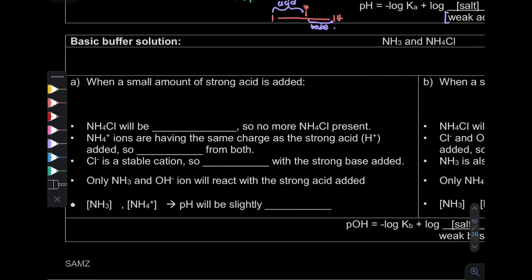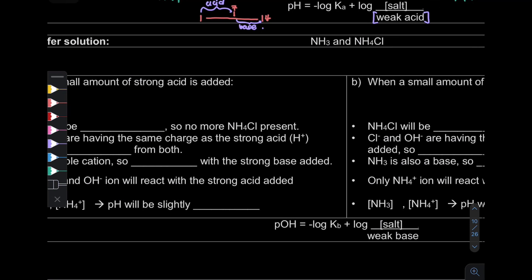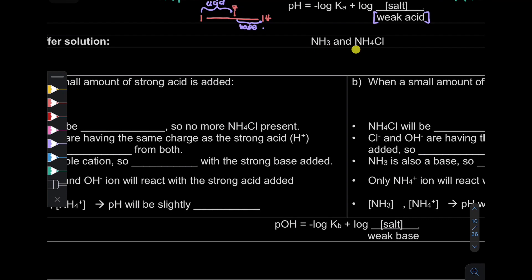Okay, so we have looked at the acidic buffer solution. Now we're going to look at the basic buffer solution. I have NH3, which is ammonia, and NH4Cl, which is ammonium chloride. Since this is a basic one, NH3 is my weak base, and NH4Cl is my strong conjugate acid.